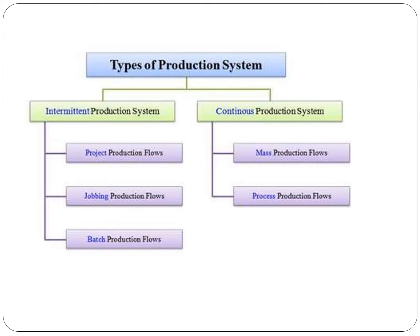Basically there are two types of production systems: one is intermittent production system and the other one is continuous production system. There are subsystems under these two types. In intermittent, there are project production system, jobbing production system, and batch production system. In continuous production system, there are two types: one is mass and the other one is process.